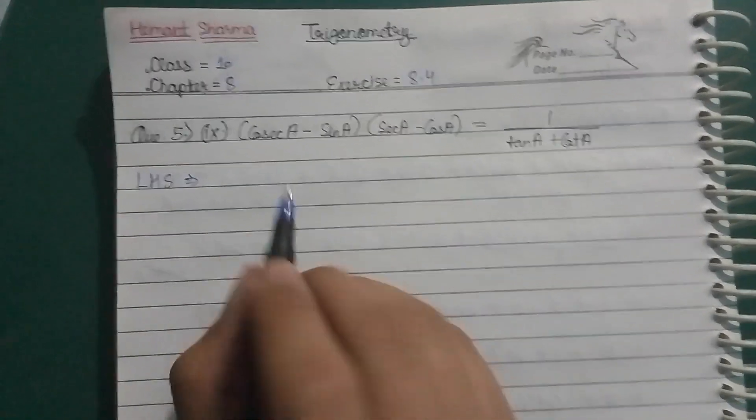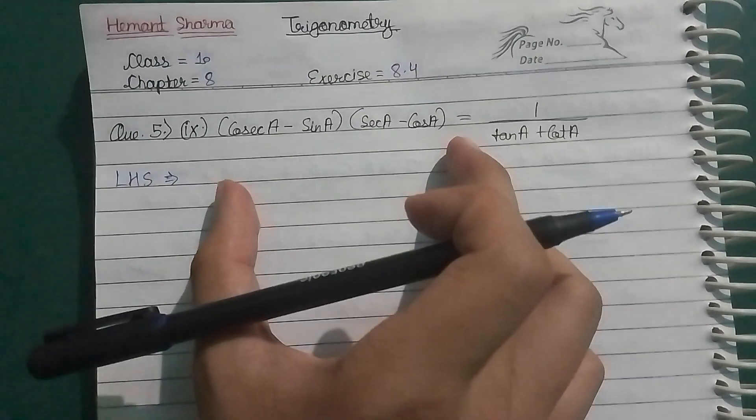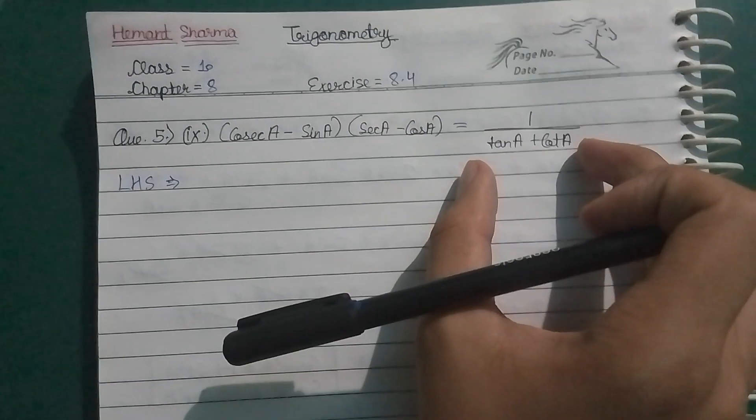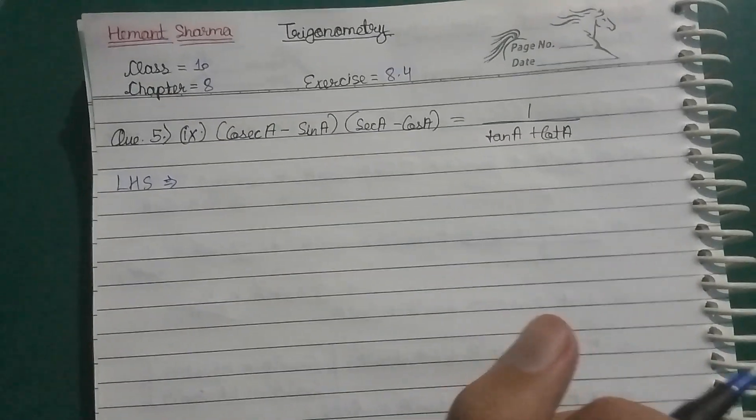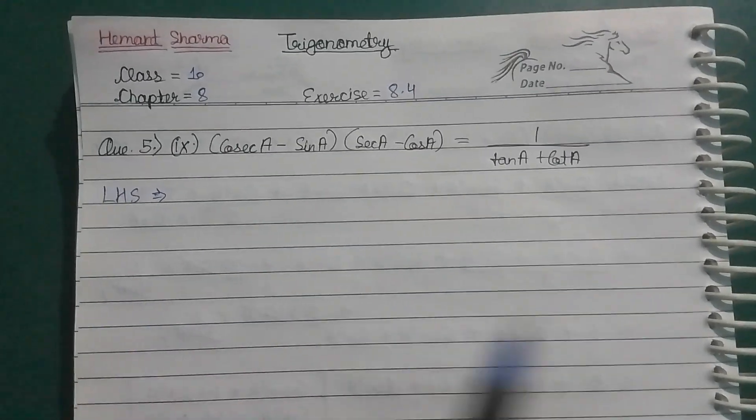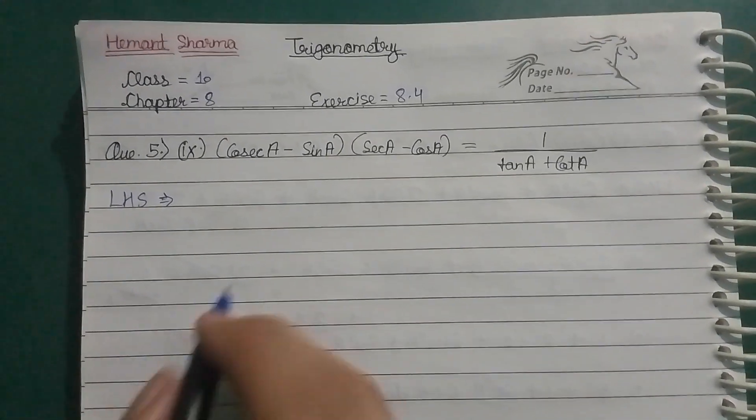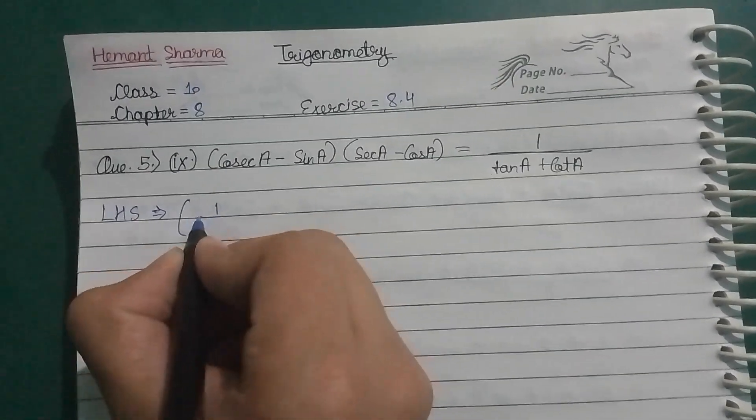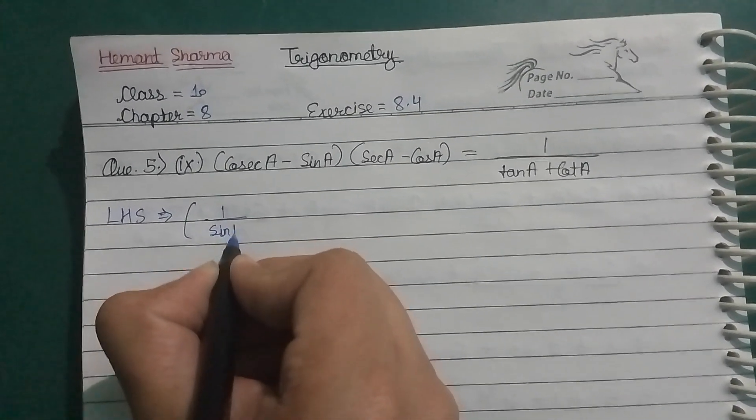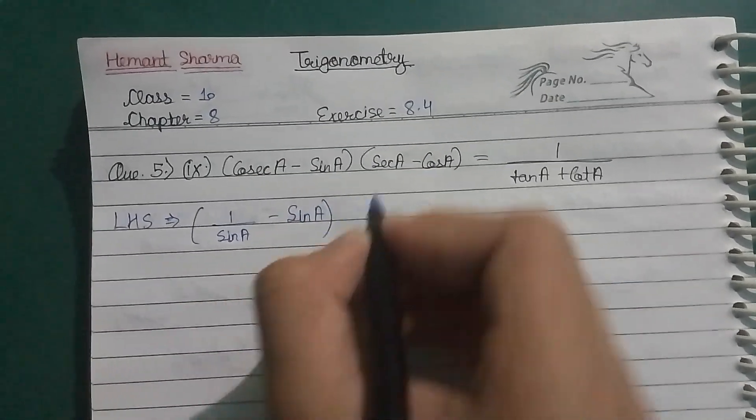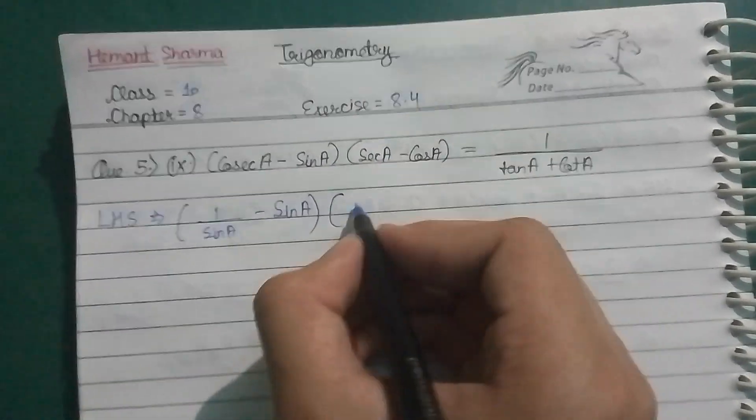This is going to show you one thing: the LHS will solve to the answer which will not be further modified. So let's start our question. Cosecant A, we break as 1 by sin A, minus sin A, into secant A, 1 by cos A, minus cos A.